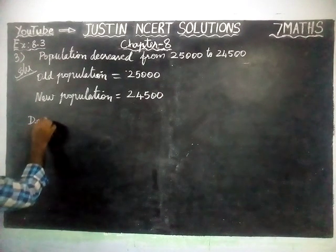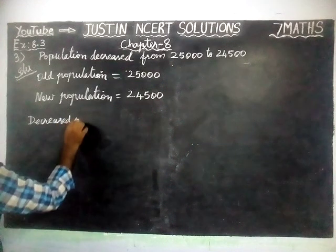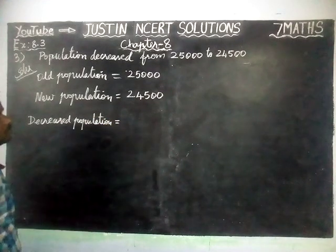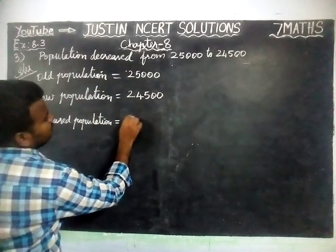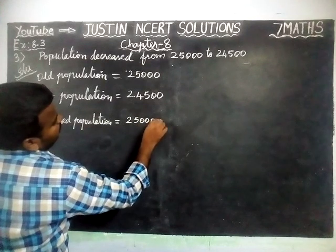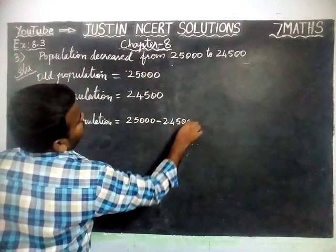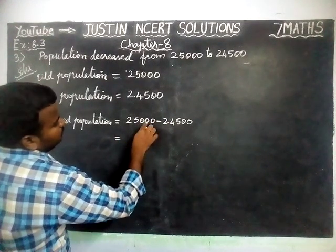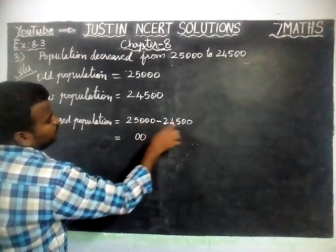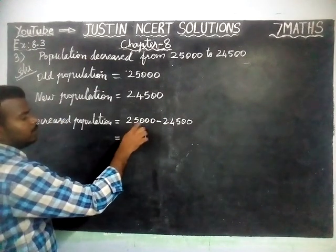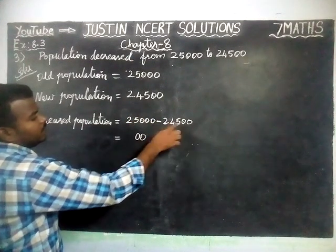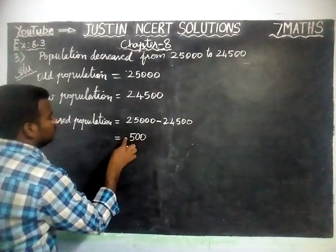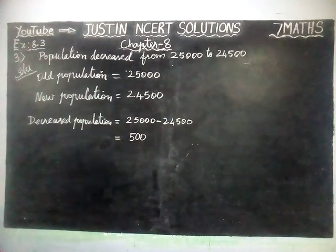Decreased Population is equal to Old Population minus New Population, that is 25,000 minus 24,500. Subtracting: 0 minus 5 is not possible, so we borrow. 10 minus 5 is 5, 4 minus 4 is 0, 2 minus 2 is 0. Therefore, Decreased Population is equal to 500.